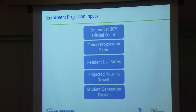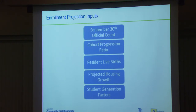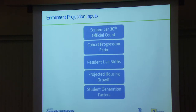Now I'll get into the inputs to the model. There's the September 30 official count, the cohort progression ratio, and resident live births — that word resident is important because we only care about Arlington resident live births, as non-residents would inflate our numbers. Then there's projected housing growth — we work very closely with county staff on this, and I'm thankful for their GIS-formatted data. Finally, there are student generation factors, which I'll discuss shortly.